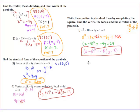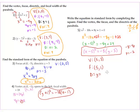That gives us our standard form. From that, the vertex h comma k is five comma three. To find focus and directrix, negative eight equals four p, so p equals negative two. The focus, since we have x squared, is at h comma k plus p — so five comma three plus negative two — which is five comma one. The directrix is y equals k minus p: three minus negative two equals three plus two, so y equals five.